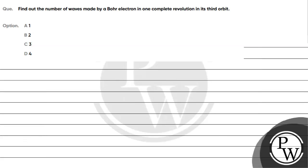Let's read this question. The question says: find out the number of waves made by a Bohr electron in one complete revolution in its third orbit. Option A: 1, Option B: 2, Option C: 3, Option D: 4.